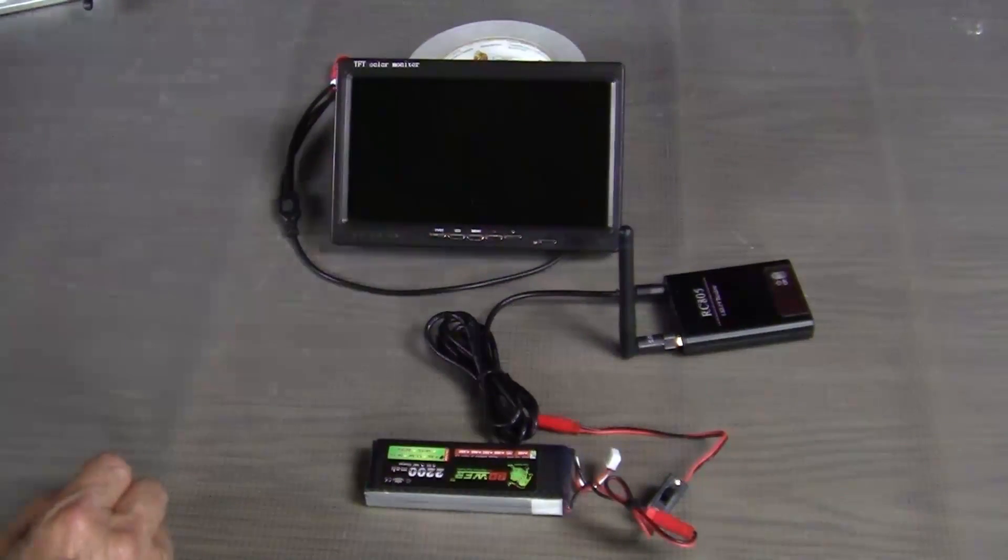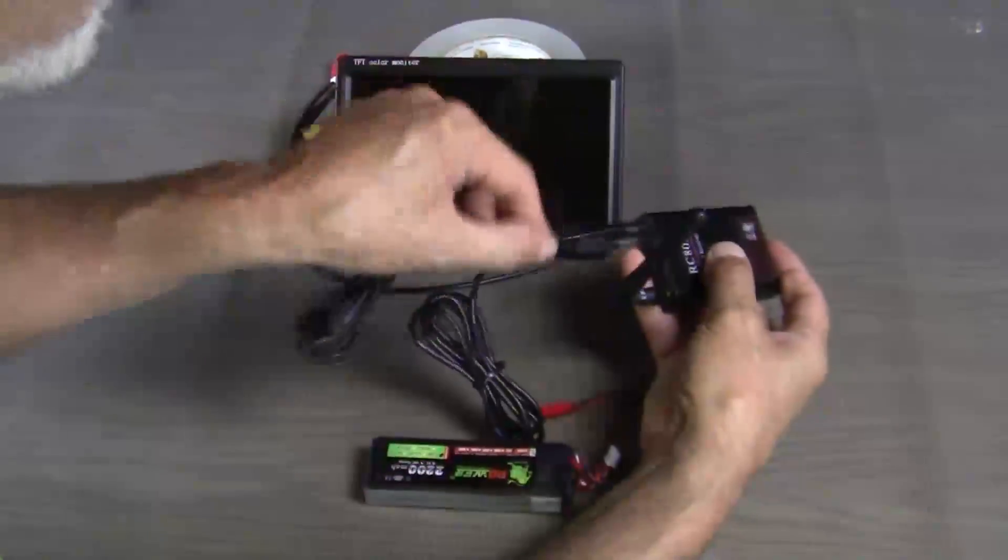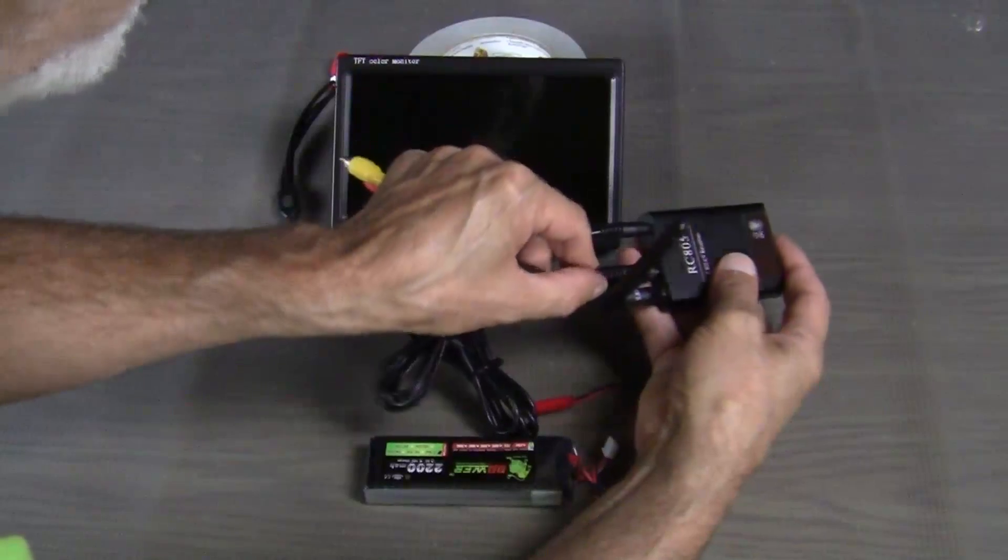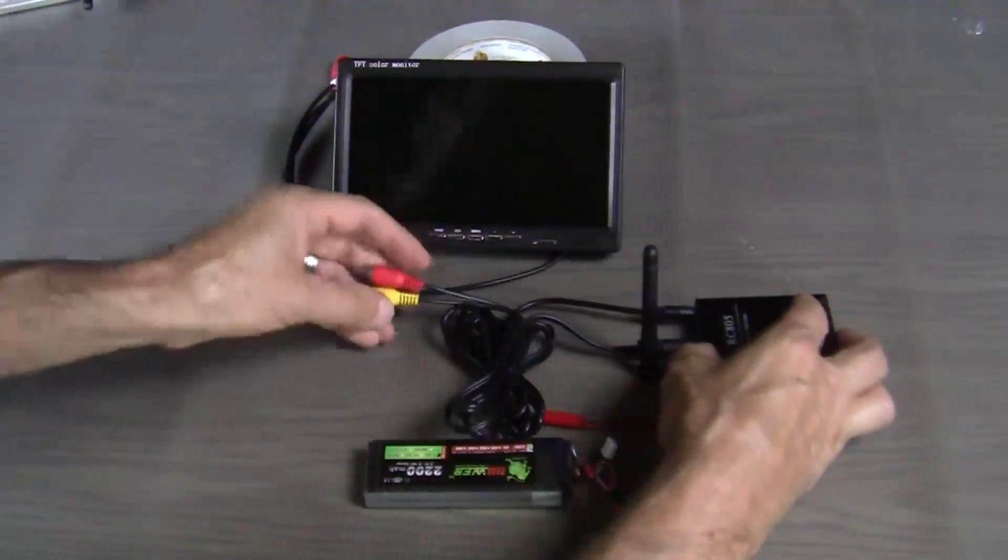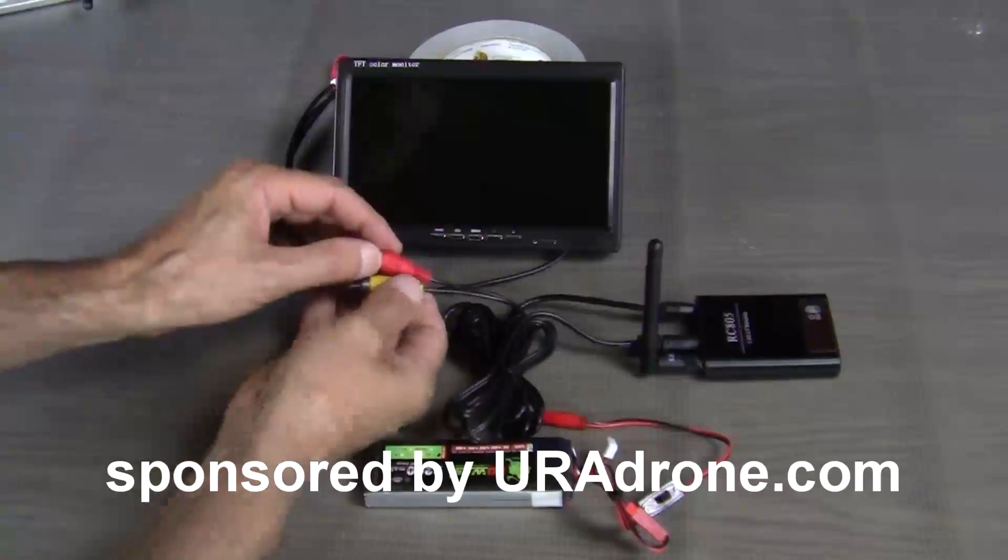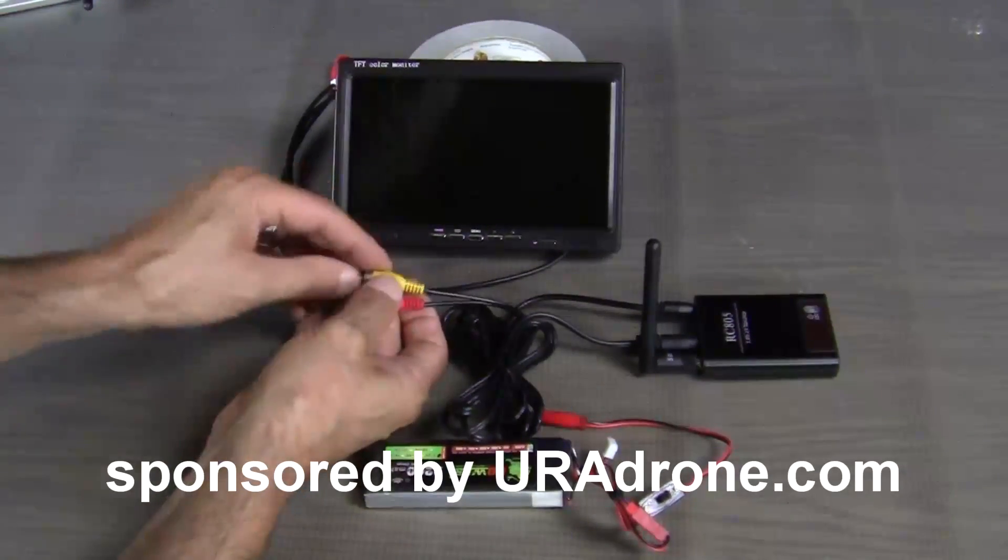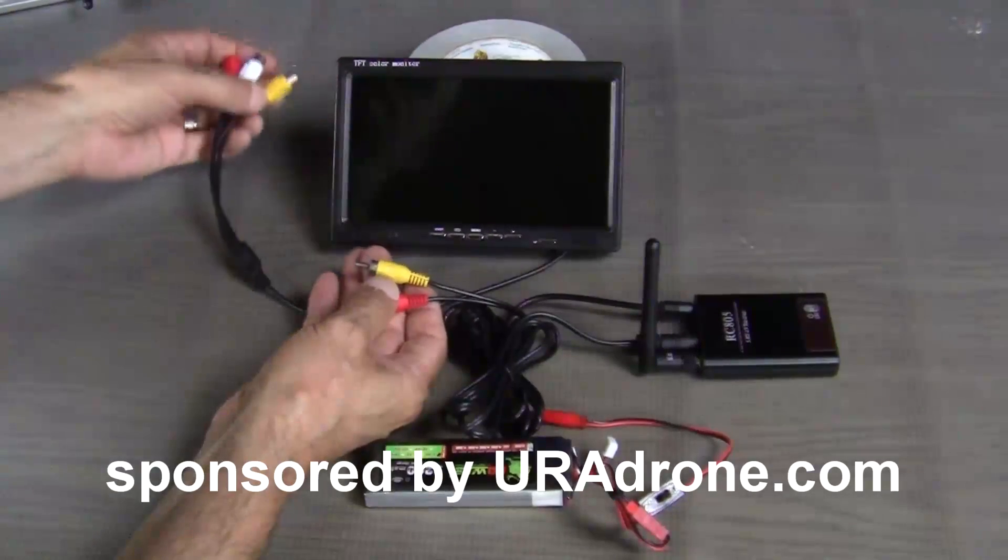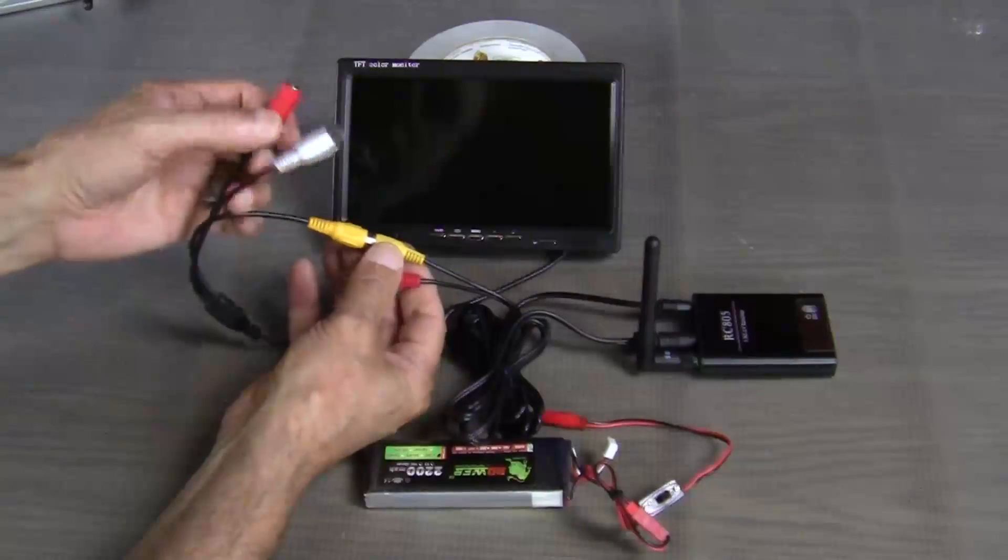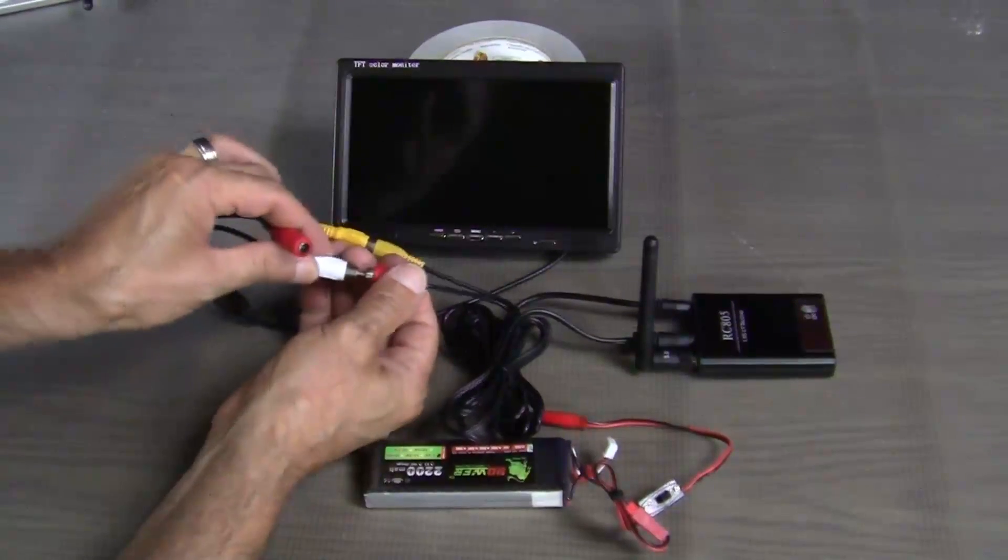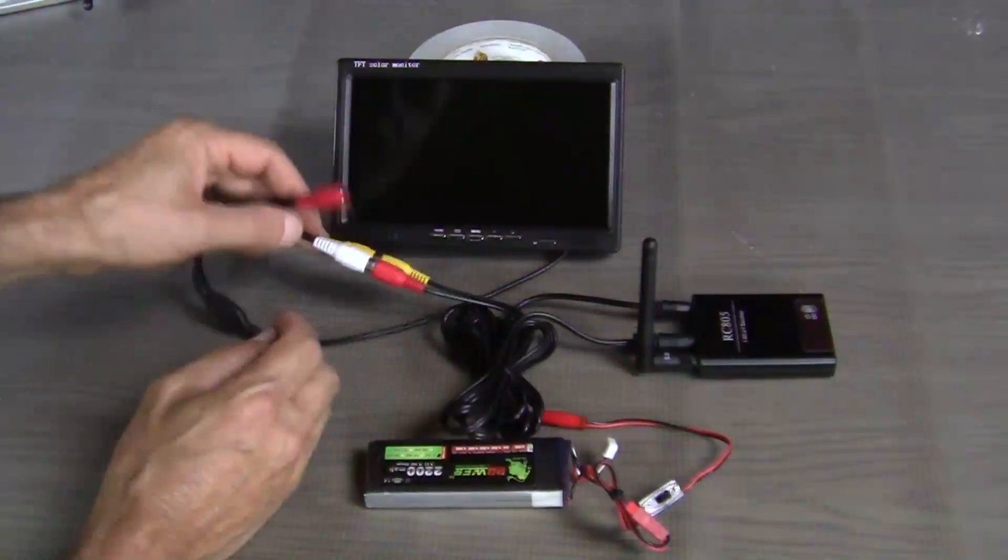And now we'll connect this cable, which comes with the receiver. And all of these components can be purchased on our sponsor's website, urodrone.com. So, just pay them a visit and pick up the parts that you need. And we can connect it here to this nice little seven inch monitor. And then that part of the system is done.